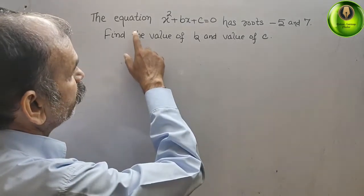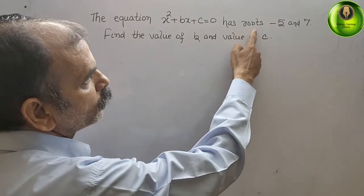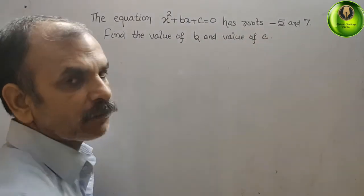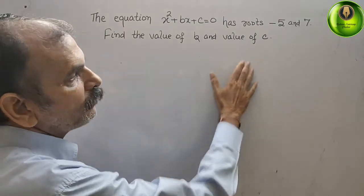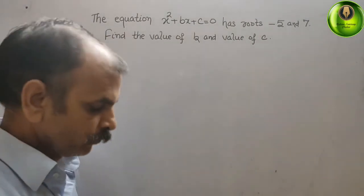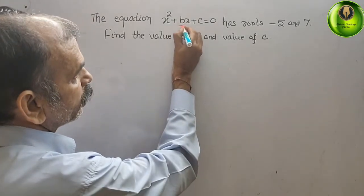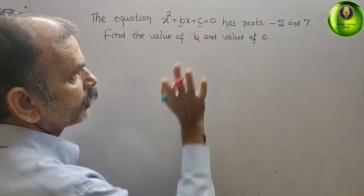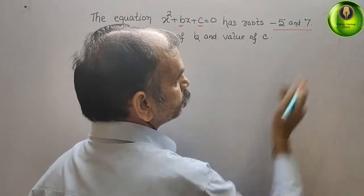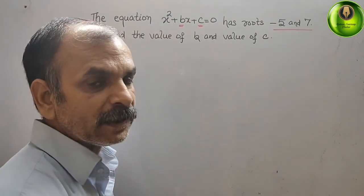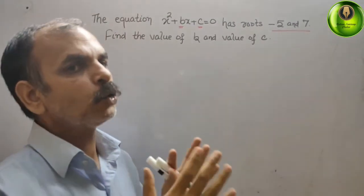Your question is: the equation x squared plus bx plus c is equal to 0 has roots minus 5 and 7. Find the value of b and the value of c. We have to find out the value of b and c, and they have given the roots. You can see the variable here.